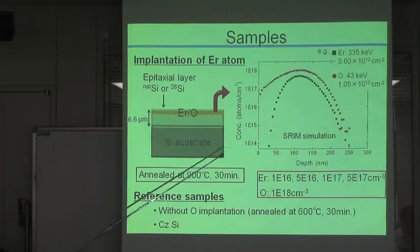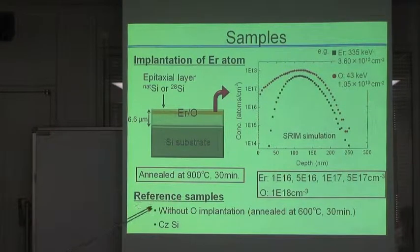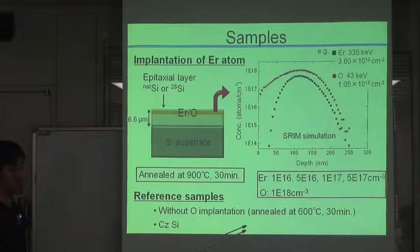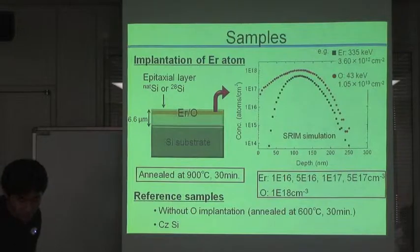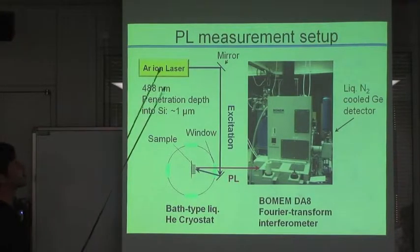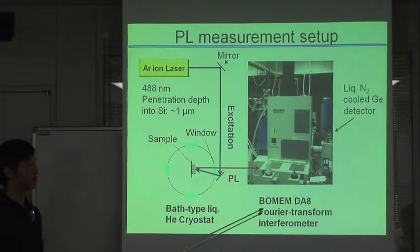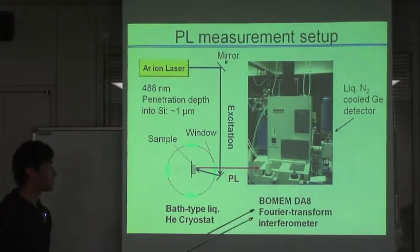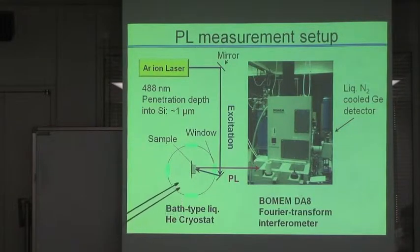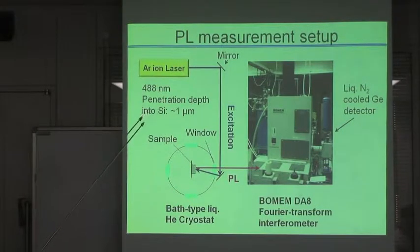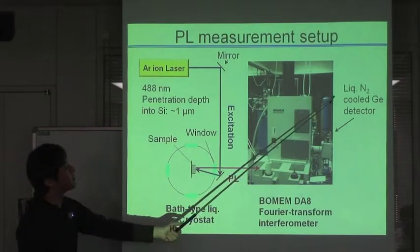All the samples were annealed at 900 degrees Celsius for 30 minutes. I also fabricated reference samples without oxygen implantation; in this case, samples were annealed at 600 degrees Celsius for 30 minutes, and I also implanted CZ silicon. For the PL measurement setup, we are using a Bomem DA8 Fourier transform interferometer. The sample was put in a bath-type liquid helium cryostat. The samples were excited by a 488 nanometer argon laser line. The penetration depth of this line into silicon is about 1 micrometer, and the PL is detected by a liquid-nitrogen-cooled germanium detector.